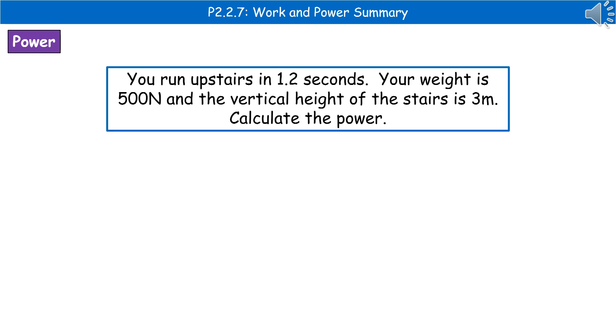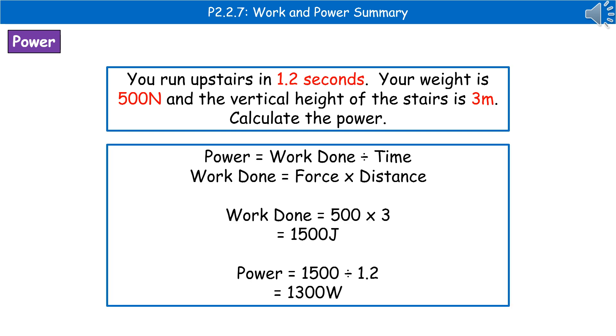To give you an example of the kind of question I'm talking about, you run upstairs in 1.2 seconds, your weight is 500 newtons, and the vertical height of the stairs is 3 meters. Calculate the power. Because we're talking about a calculation question, the first thing we do is highlight, circle, underline, or jot down the key bits of information. So we've got 1.2 seconds, 3 meters, and 500 newtons there.